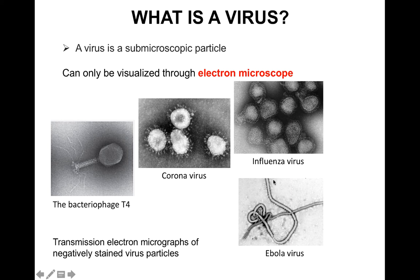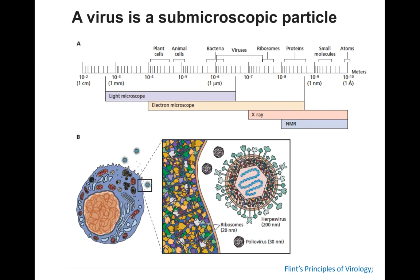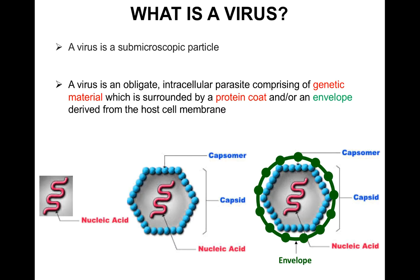Different viruses can have different architecture, morphology, and shapes, but all of them can only be visualized by electron microscopes. In terms of sizes, viruses vary widely but remain somewhere between 10^-6 to 10^-8 meters — 10^-6 is the range of bacteria and 10^-8 is the range of ribosomes, so viruses are bigger than ribosomes but smaller than bacteria. To be more elaborate, a virus is a sub-microscopic particle and an obligate intracellular parasite comprising genetic material surrounded by a protein coat and/or an envelope derived from the host cell membrane.